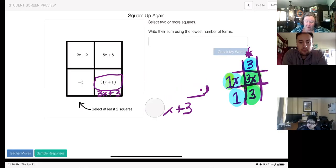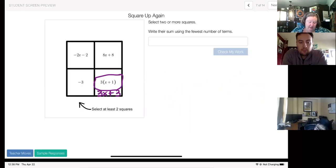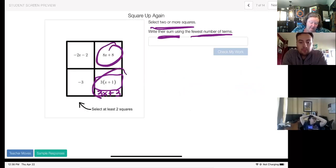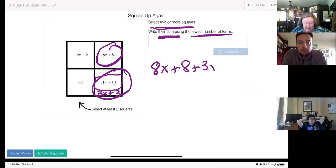So this one would need to be rewritten as three X plus three. I'm going to get rid of all of this now and go back. The direction says, select two or more squares, write their sum using the fewest number of terms. I'm going to take this one, I'm going to take this one and this one then and say eight X plus eight, plus three X, plus three.